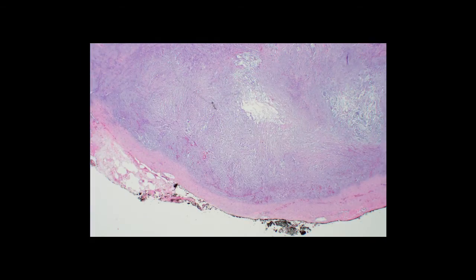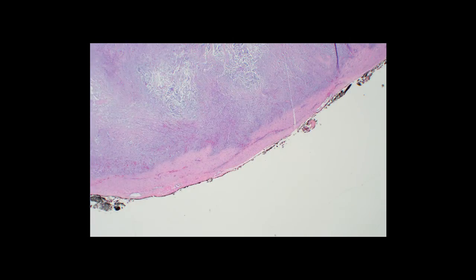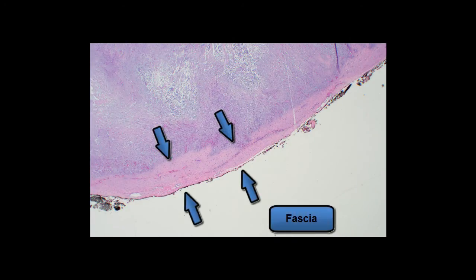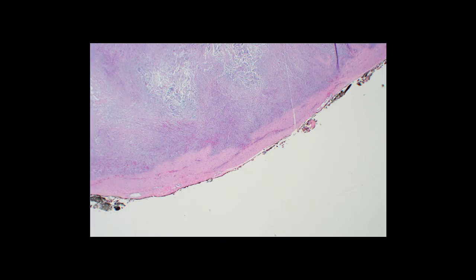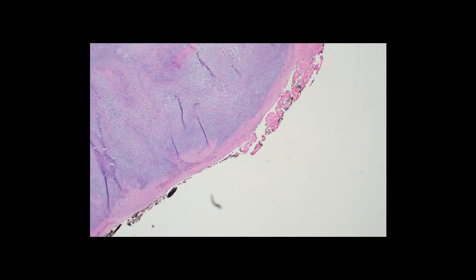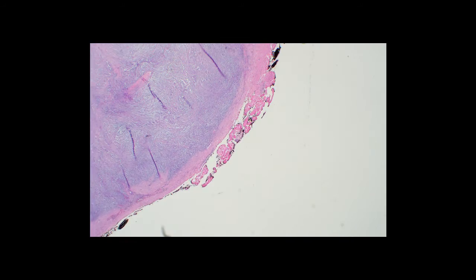Moving around the periphery of the lesion, you can appreciate this thick fibrous layer — this is actually compressed fascia from which the proliferation is arising, thus the name nodular fasciitis. And you can see here some skeletal muscle bundles on the other side of the fascia, so this lesion is probably pushing up from the fascia into the overlying subcutis.